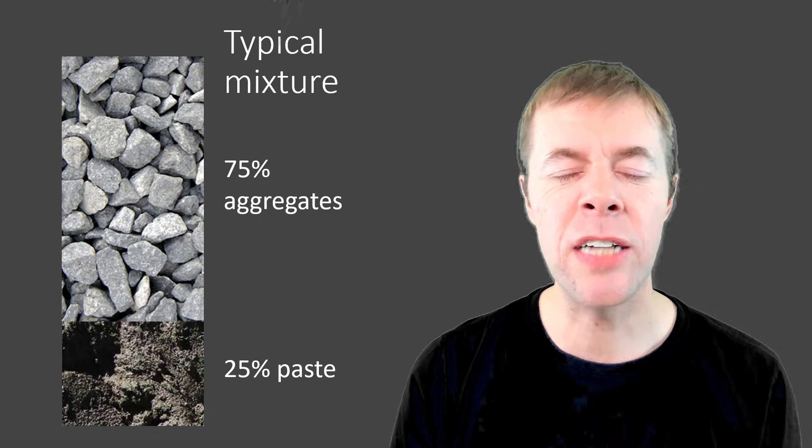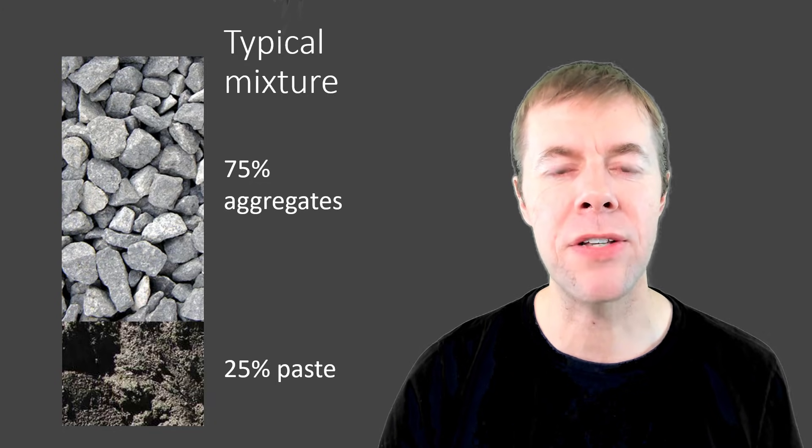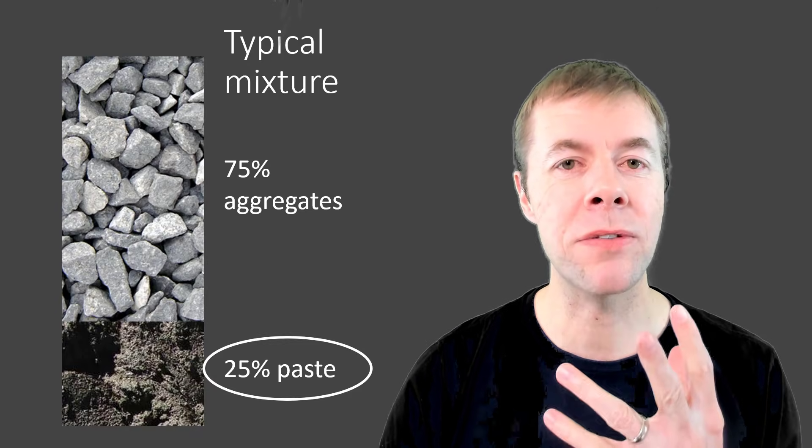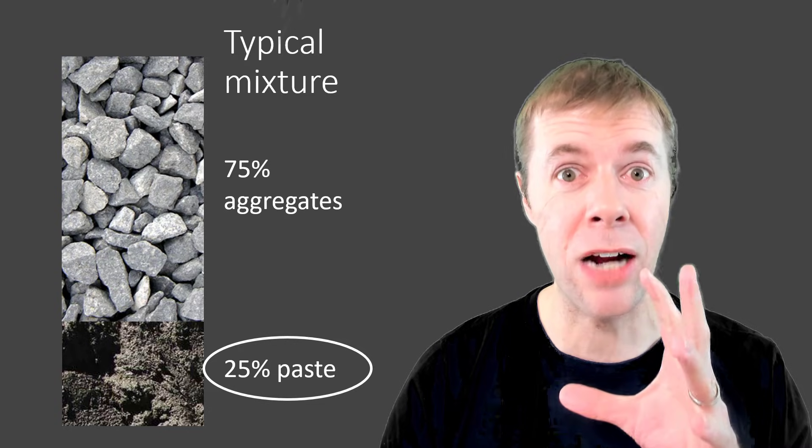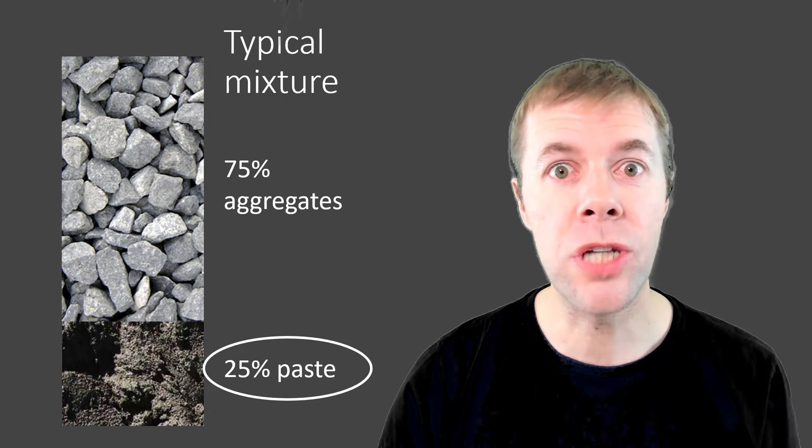A typical concrete mixture has about 75% aggregate and about 25% of the volume is paste. Paste? That's what we're going to be talking about today. We're going to assume you've got great aggregate. There's lots of good concrete aggregate out there. Use some of it.